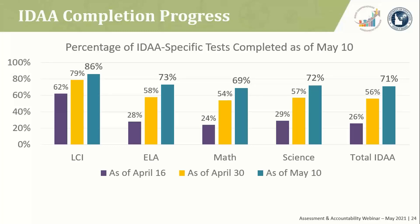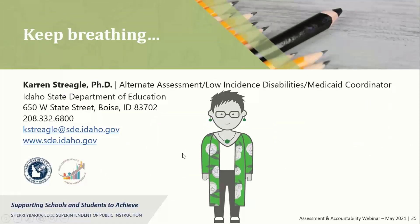You have seven days left to administer the alternate assessment fixed form with printed response action cards as part of the paper test window, and 12 days left to administer the Idaho alternate assessments overall. Keep breathing — don't hesitate to contact me if you have any issues.